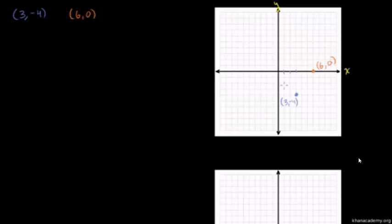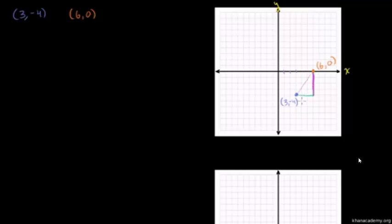What I want to figure out is the distance between these two points — how far is this blue point away from this orange point? It might seem unclear, but we're talking about the Pythagorean theorem. Let me draw the triangle right there. You might immediately recognize this is a right triangle, with a right angle there. The base goes straight left to right, and the right side goes straight up and down.